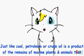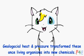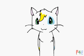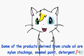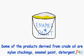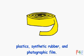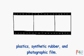Just like coal, petroleum, or crude oil, is a product of the remains of marine plants and animals from millions of years ago. Geological heat and pressure transform these once-living organisms into new chemicals. Some of the products derived from crude oil are nylon stockings, enamel paint, detergent, plastics, synthetic rubber, and holographic film.